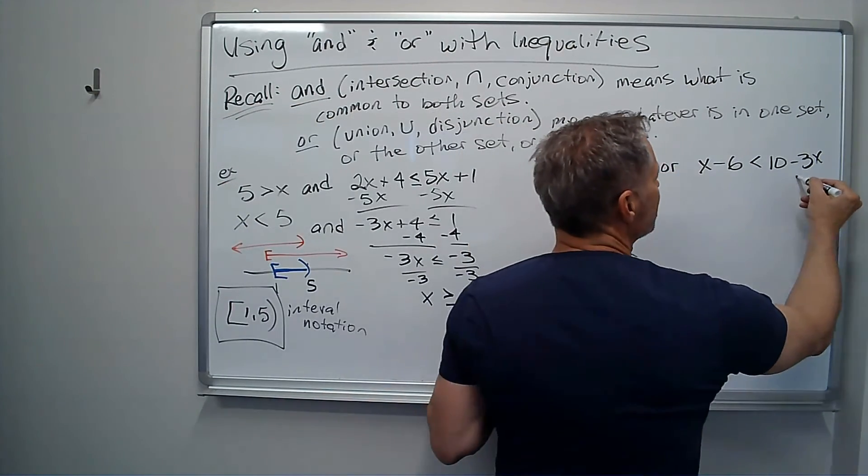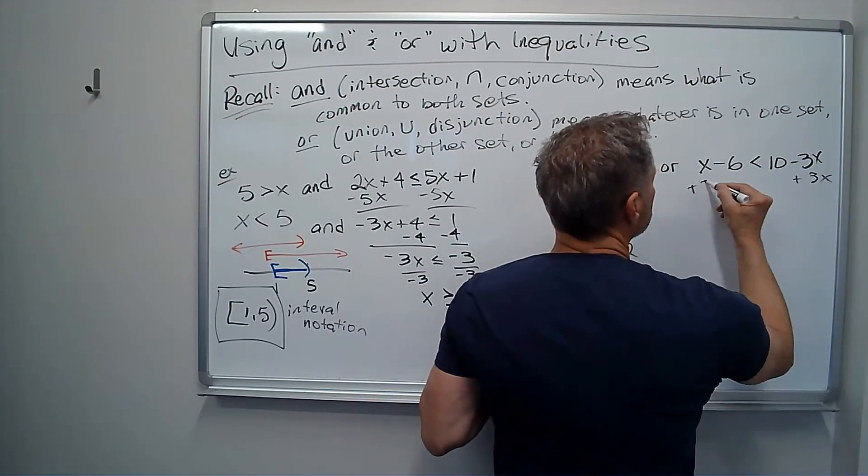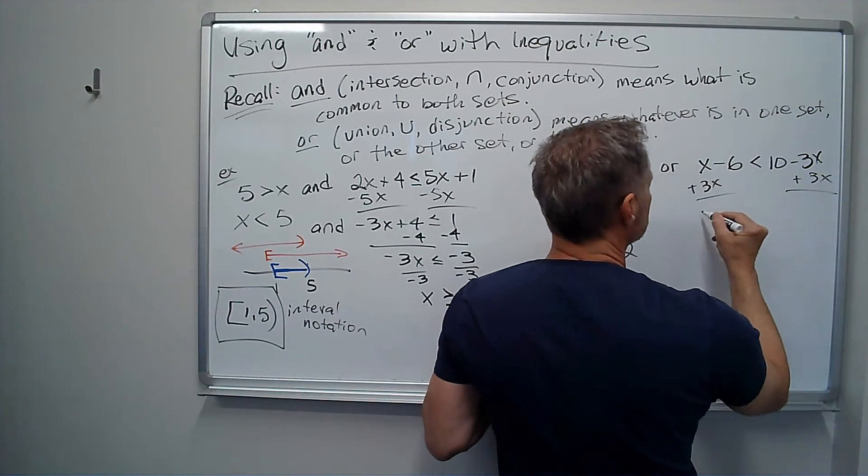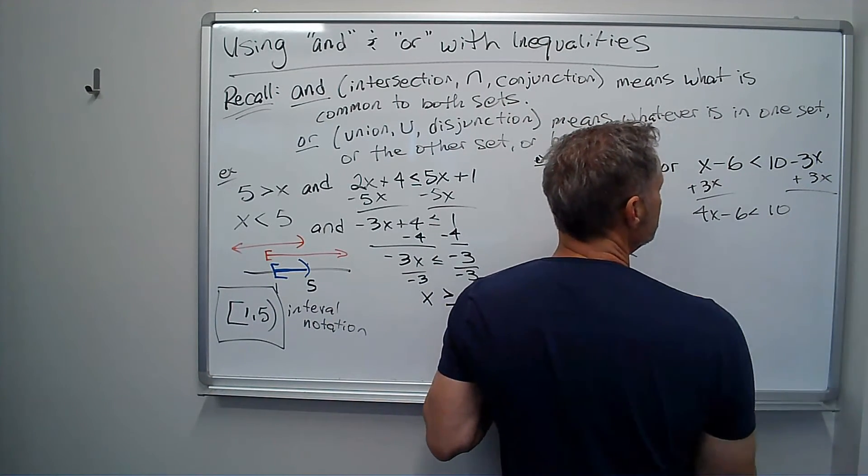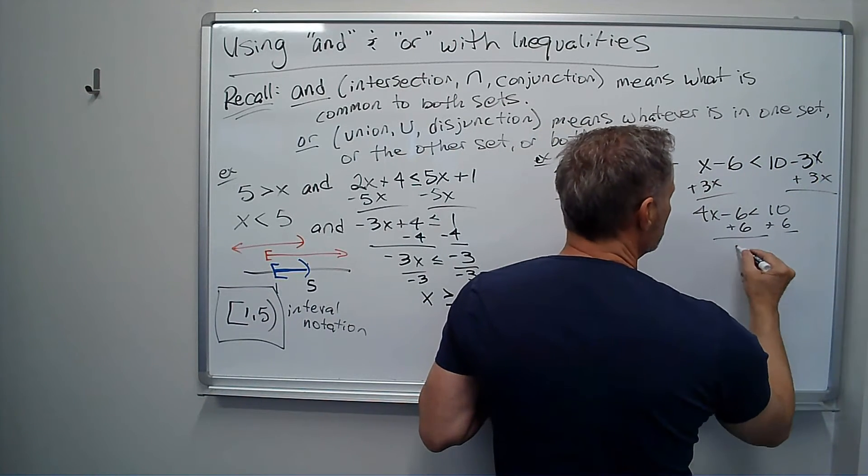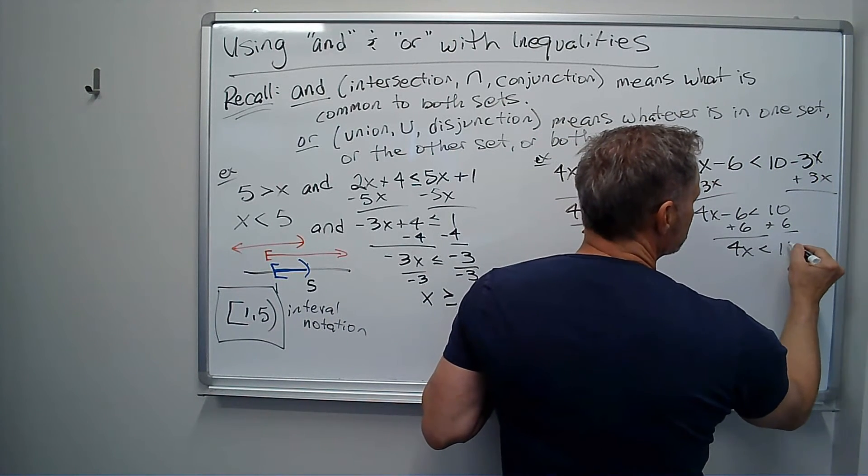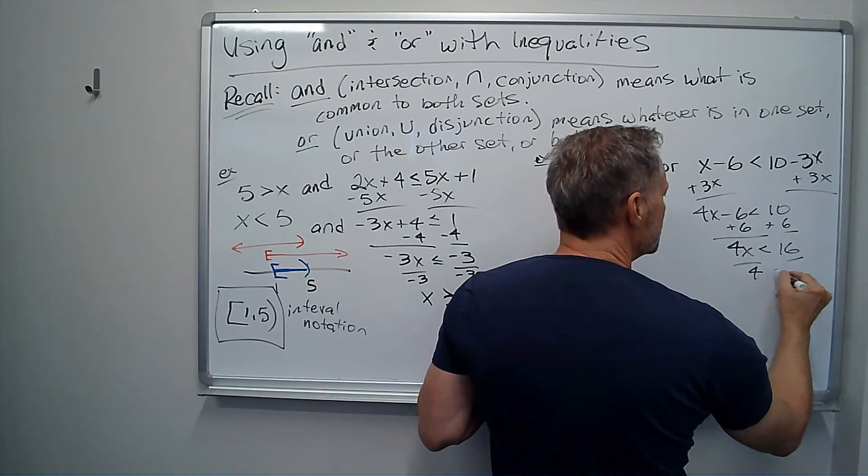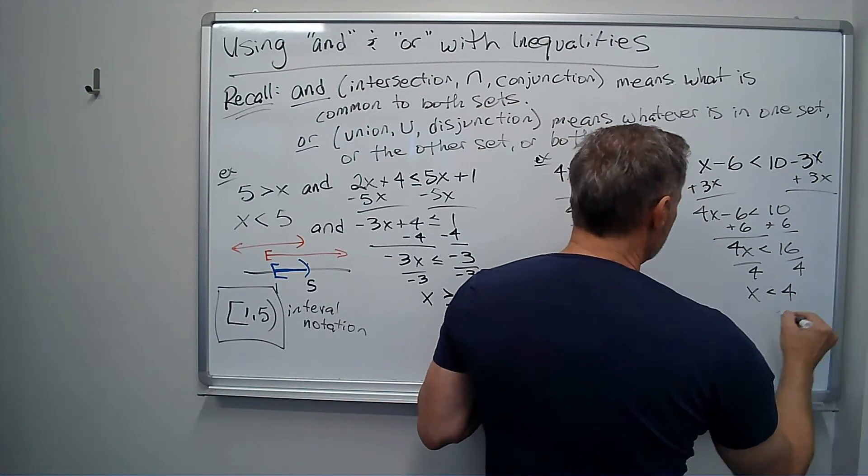And over there, I'm going to do the same thing. We're going to get the x on the left, so I'm going to add 3x. So I get 4x minus 6 is less than 10. Adding, I don't flip. Add 6 to both sides, I don't flip. 4x less than 16. Divide both sides by 4. x is less than 4. And I have an or this time.